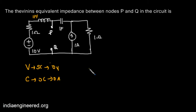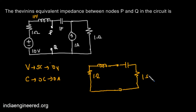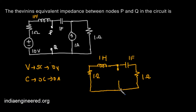In the redrawn circuit we have one ohm resistance, the 10 volt source is short-circuited, we have the 1 henry inductance, the points P and Q, a one farad capacitance, and the one ohm resistance. Now we have to find the equivalent impedance between P and Q.